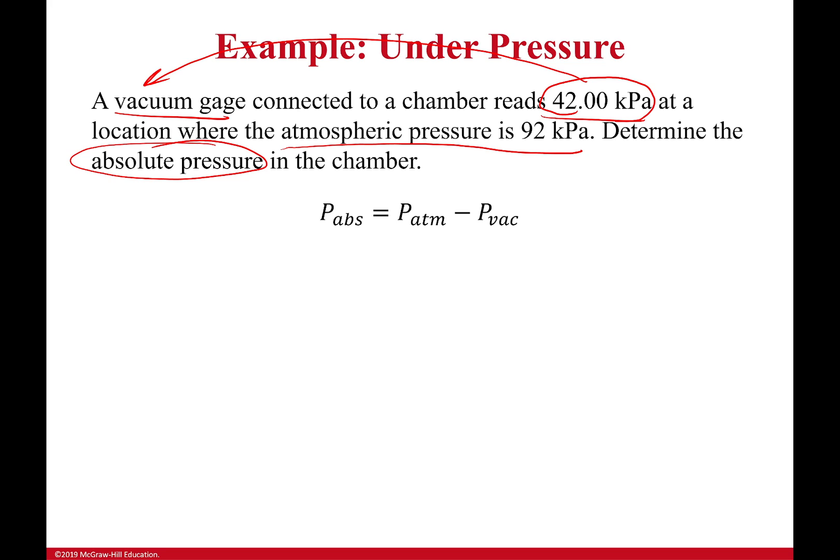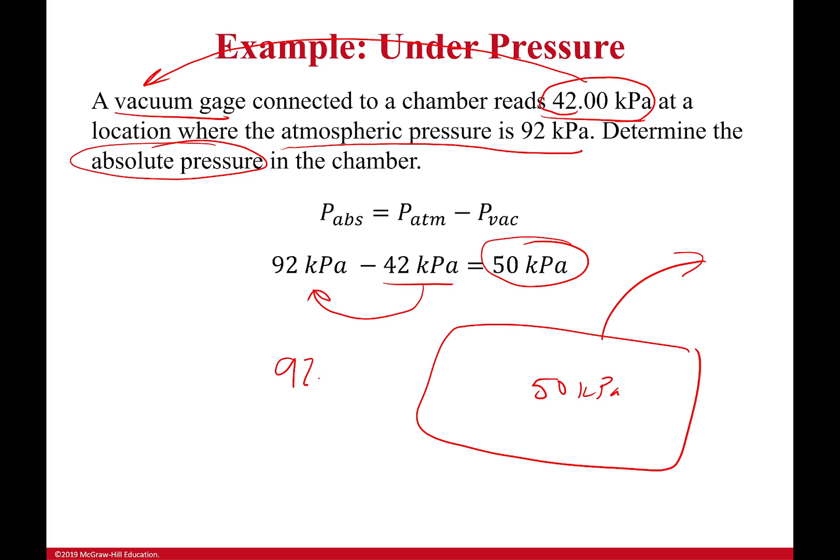So if I do that, what do I see? My absolute pressure is going to be 50 kilopascals because my vacuum gauge is reading 42 kilopascals below atmospheric. This is what's inside of the chamber. So I have my pressure tank right here. I've been pumping air out, and this is now at 50 kilopascals, while atmospheric is 92 kilopascals. And there's a difference there of 42.